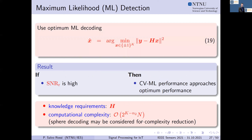For reconstructing information X, we may use ML decoding given by equation 19. At high SNR, the combination of Chair-Varshney rule and maximum likelihood decoding again approaches optimum performance. In this case, knowledge requirements are given by the channel state information matrix H, and computational complexity is exponential with the number of sensors, but can be reduced using sphere decoding or similar techniques.